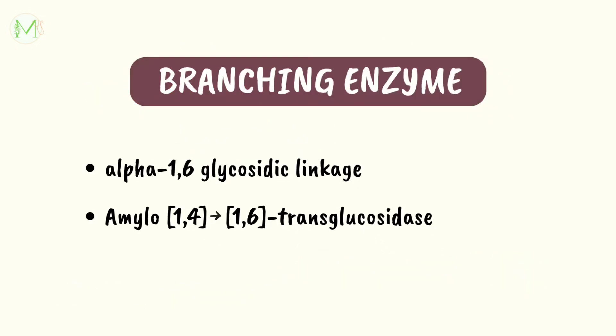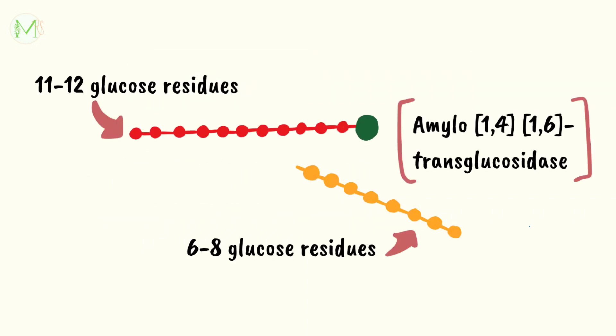We need branches for which we require a branching enzyme called amylo-1,4-1,6 transglycosidase enzyme. This branching enzyme will form alpha-1,6 glycosidic linkages. When the chain is lengthened to 11-12 glucose residues, this branching enzyme will transfer a block of 6-8 glucose residues from this chain to another site on the growing molecule.